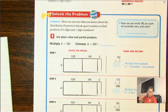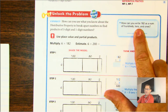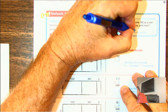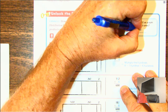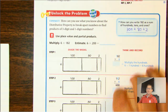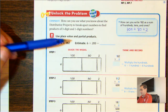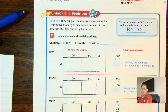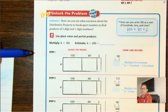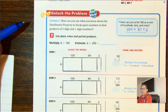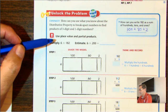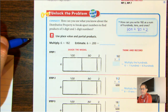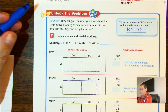If we look at 182 and it says how can you write this as a sum, it would be 100 plus 80 plus 2. So if we were going to use the distributive property with this, we would multiply 6 times 100, 6 times 80, plus 6 times 2. The distributive property says the sum of the digits is the same as multiplying each addend and then adding those partial products.